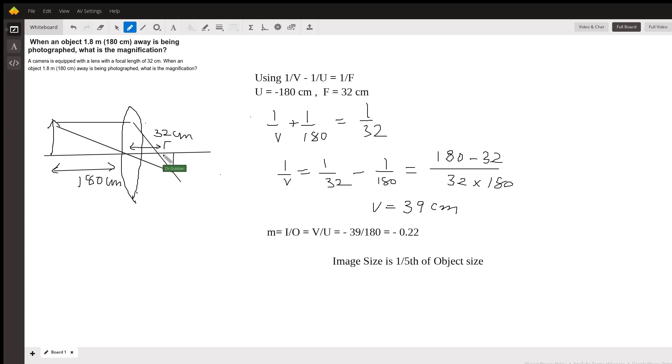If you plug in these values in this formula, 1/v plus 1/180 equals 1/32, because the original formula is 1/v - 1/u = 1/f. So plugging in the values, we get 1/v = 1/32 - 1/180.